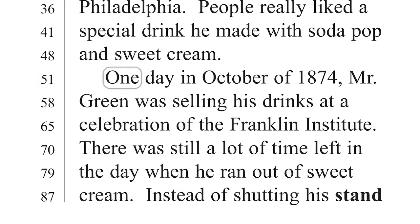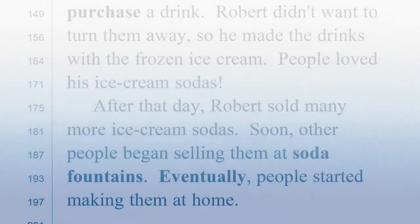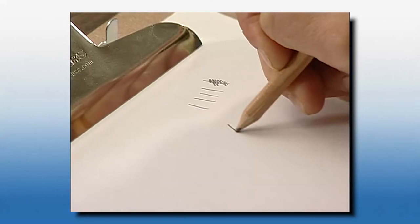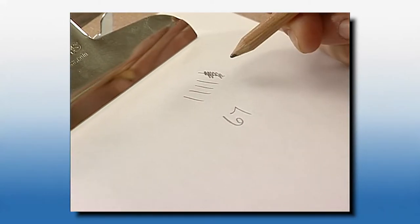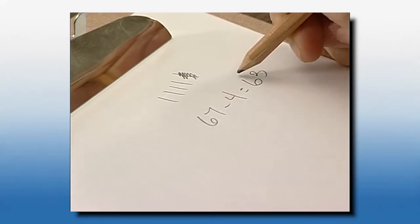[Counting words: 51, 52, 53, 54, 55.] There are a couple of guidelines to help you count words in unusual situations. For example, a number written as a numeral counts as one word, as do abbreviations. Also, if two words are connected by a hyphen, both words count. To determine the student's words correct per minute score, subtract the errors from the number of words read. Record the student's words correct per minute score.